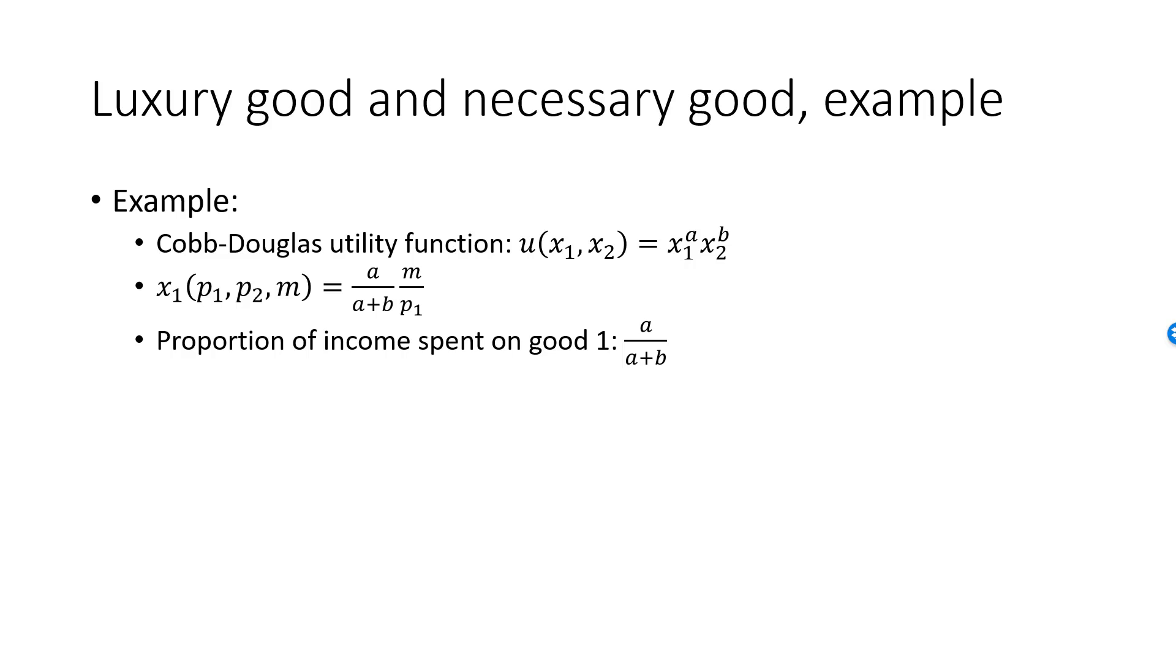The proportion of income spent on good one will not vary with M, so good one is neither luxury nor necessary. The same thing will be true for good two in this example. We will spend the proportion B over A plus B on good two. This is always the case with Cobb-Douglas preferences.